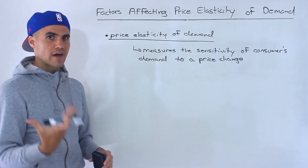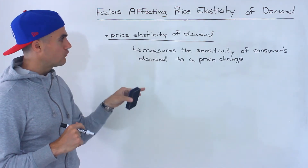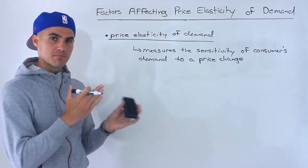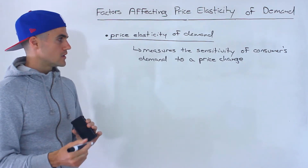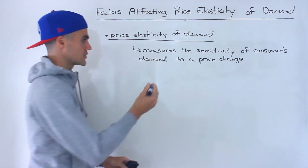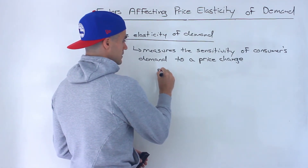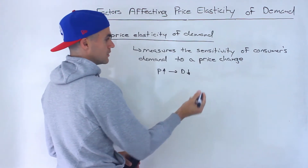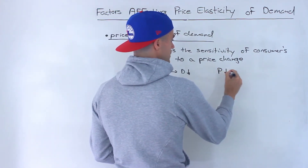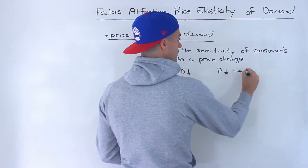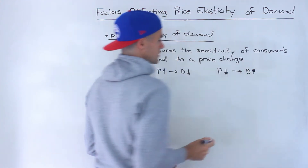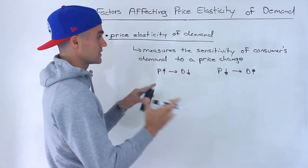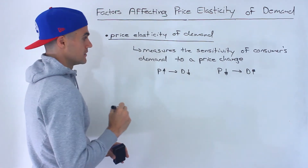Before getting into the actual factors, I want to do a quick review of what price elasticity of demand is. It's basically a measure of the sensitivity of consumers' demand to a price change. Demand and price have an inverse relationship, so if the price of a good goes up, demand is going to go down, or vice versa. It's just how much that demand is going to change — that's what the price elasticity of demand measures.